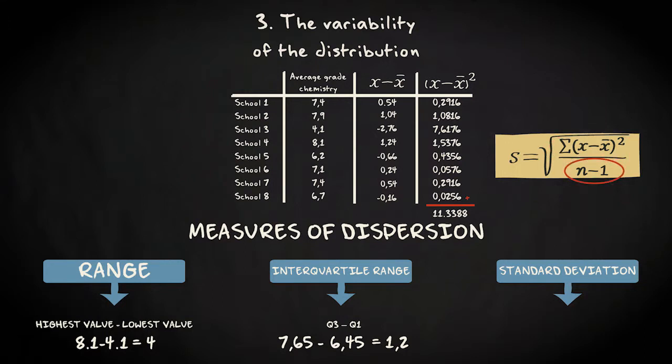The next step is to divide by n minus one. That's eight minus one is seven. 11.3388 divided by seven makes about 1.6. As a final step, we have to take the square root of this outcome. That's about 1.27. That's our standard deviation.